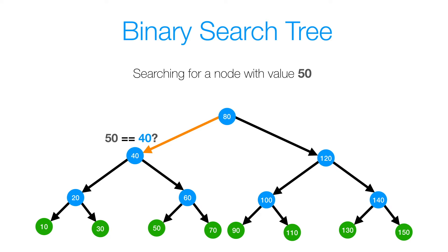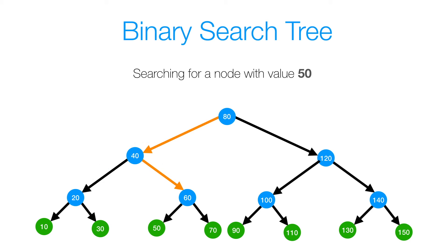Then we ask if 50 is equal to 40, and 50 is not equal to 40. So we ask if 50 is less than 40, and 50 is not less than 40, so we'll go to the right. Then we ask if 50 is equal to 60, and 50 is not equal to 60. So we ask if 50 is less than 60, and 50 is less than 60, so we'll go to the left.